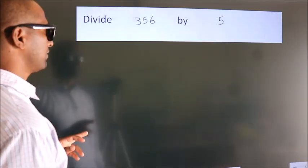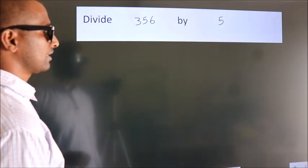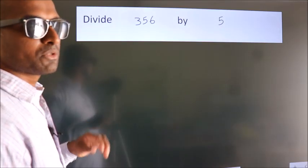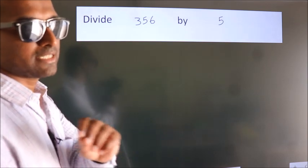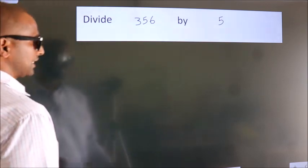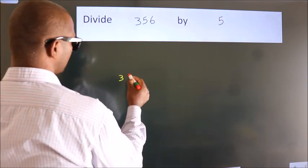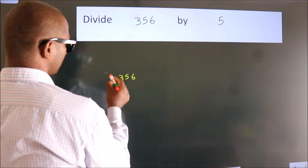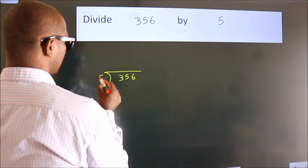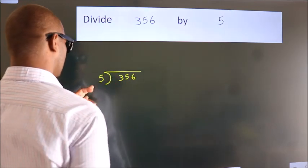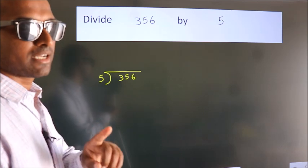Divide 356 by 5. To do this division, we should frame it in this way: 356 here, 5 here. This is your step 1.